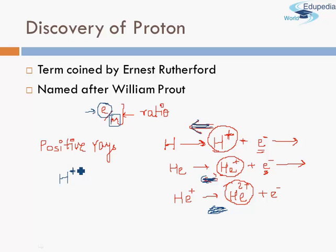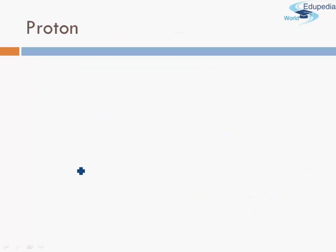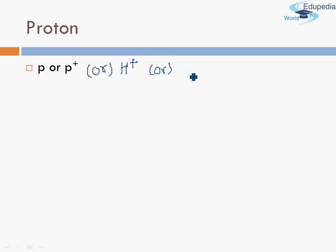The proton is denoted by a small 'p' or 'p⁺' because it carries a positive charge. It is sometimes still denoted as H⁺. In some places — very rarely — it may also be written as 'e⁺', but that is not the correct notation. We write it as 'p' or 'H⁺'.